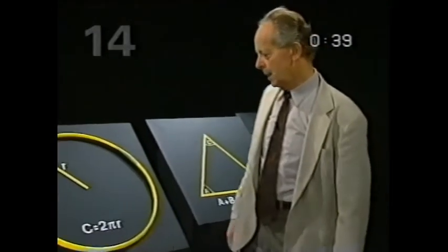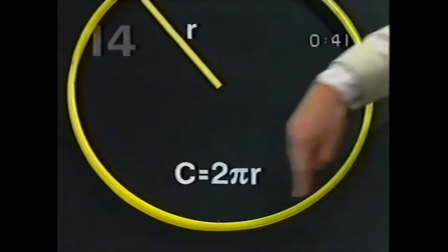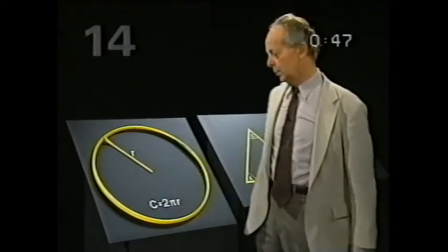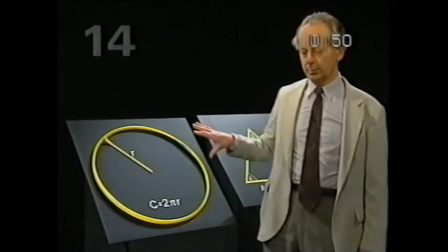As for circles, the circumference of the circle is 2πr. And again, it doesn't matter what the size of the circle is, you will always get 2πr. So that's Euclidean geometry.